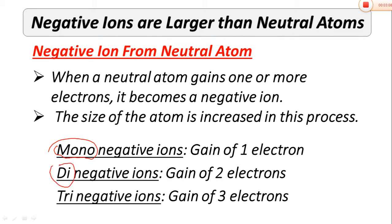Di-negative ions have a minus two charge, which forms when there is a gain of two electrons. In the periodic table, the 6A group — the oxygen group — has six electrons in the outermost shell, so they need two more electrons to complete it and will gain two electrons. Tri-negative ions have a minus three charge, which forms when there is a gain of three electrons. In the periodic table, the 5A group has five electrons in the outermost shell, so three more electrons are needed, and three electrons are gained, giving a minus three charge.